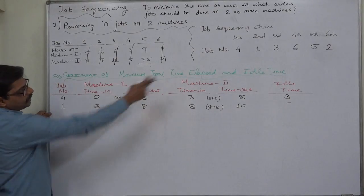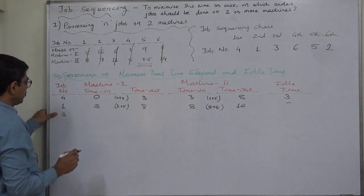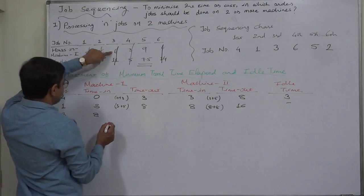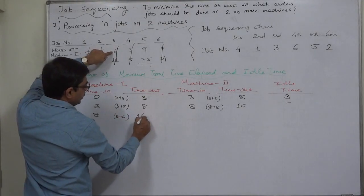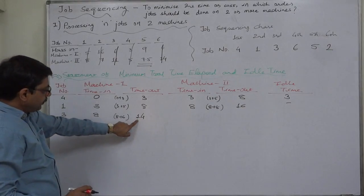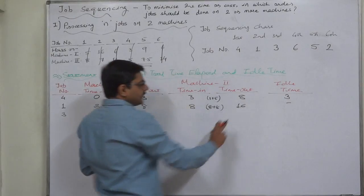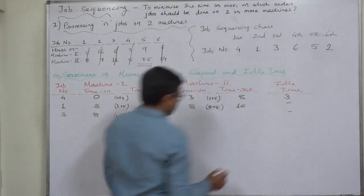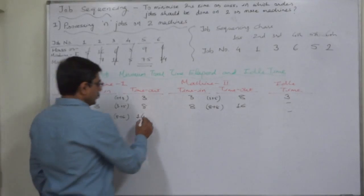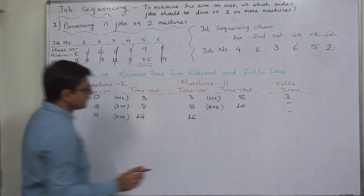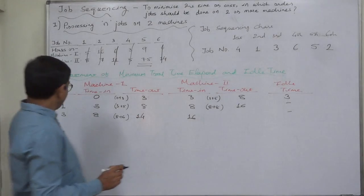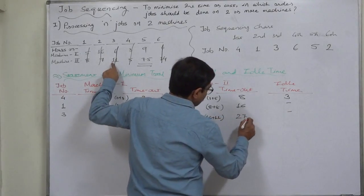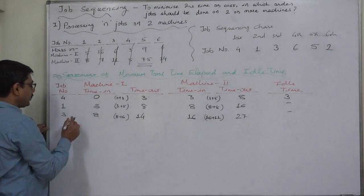On machine 1, it is now the turn of job number 3 after completing job number 1. Job number 3's starting time is 8. Job number 3 requires 6 hours on machine 1, so 8 plus 6 gives 14. Job 3 is completed at the end of the 14th hour, but machine 2 is busy till the end of the 16th hour. So the job has to wait, not the machine — there is no idle time. Idle time exists only if the machine has to wait for the job. 14 or 16, whichever is greater, becomes the time in for job number 3 on machine 2. Job number 3 requires 11 hours on machine 2, so 16 plus 11 gives 27.